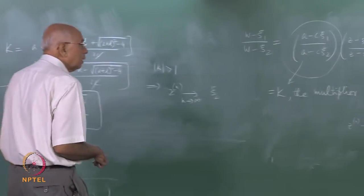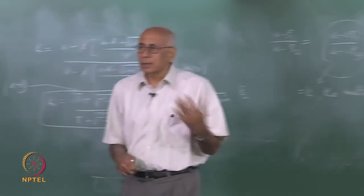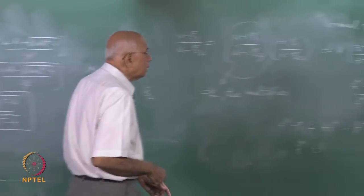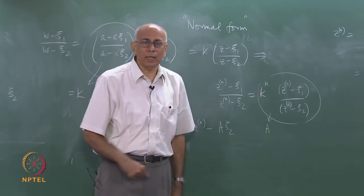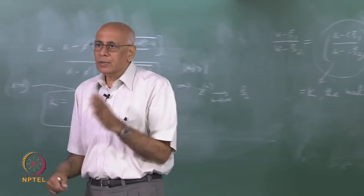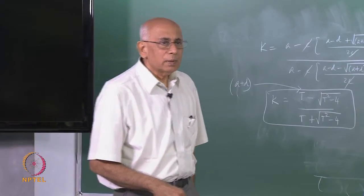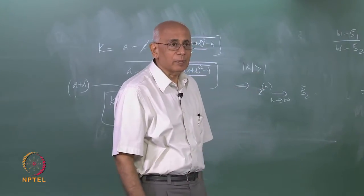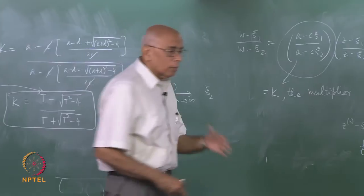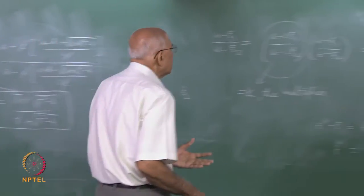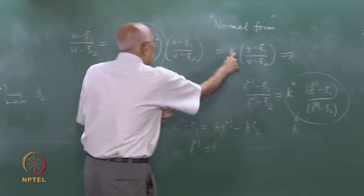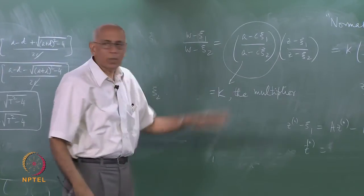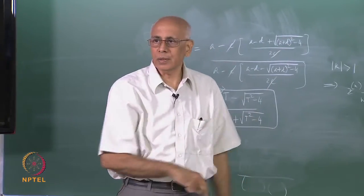Something very similar happens here where n is like discrete time — every iteration is one time step. One point I should mention: this formula is valid for negative n as well, so you can take the inverse transformation going backwards in time. The inverse of a Möbius transformation is again a Möbius transformation, written in normal form with k inverse, and that too can be iterated.